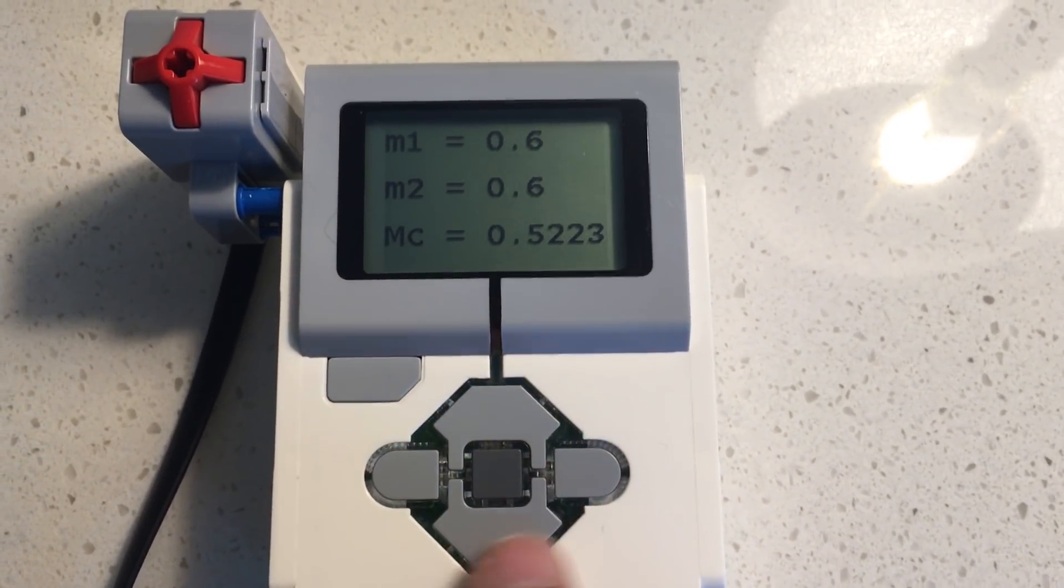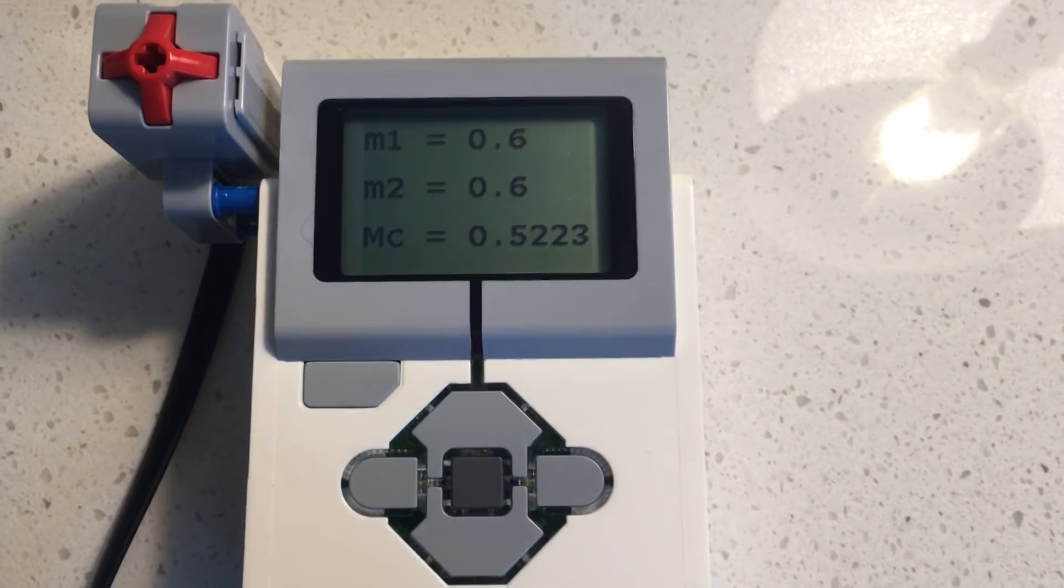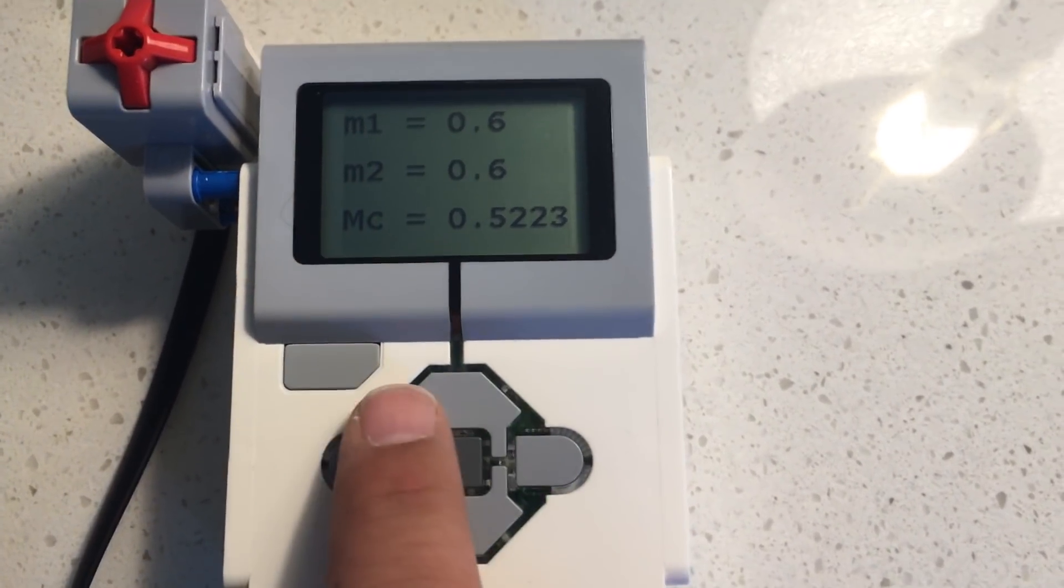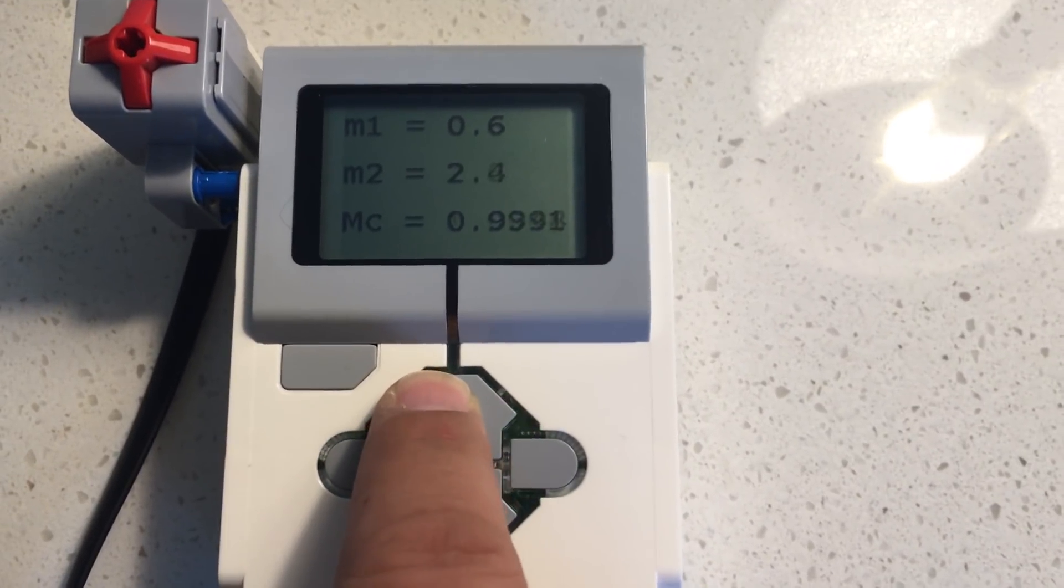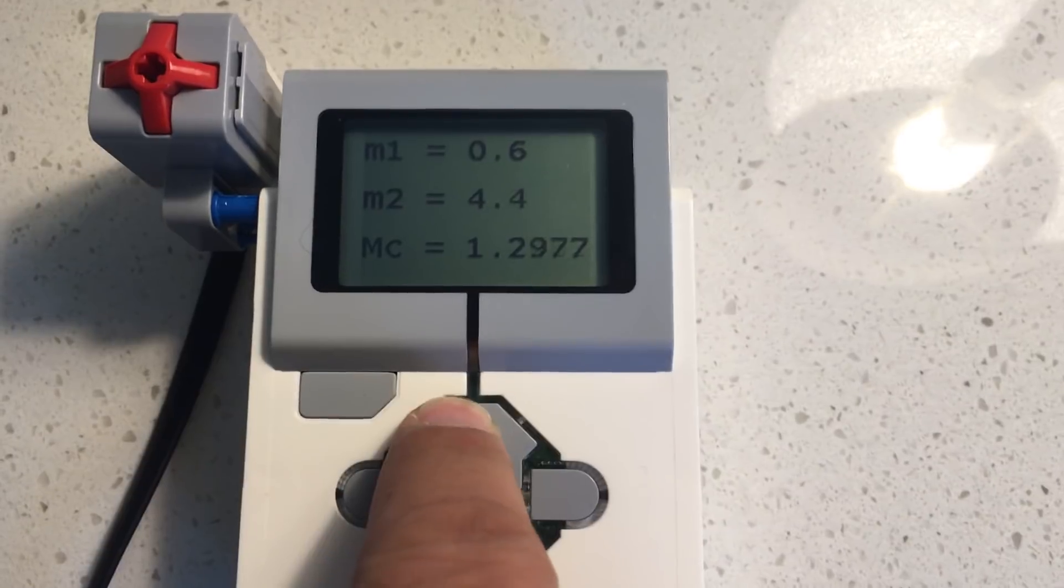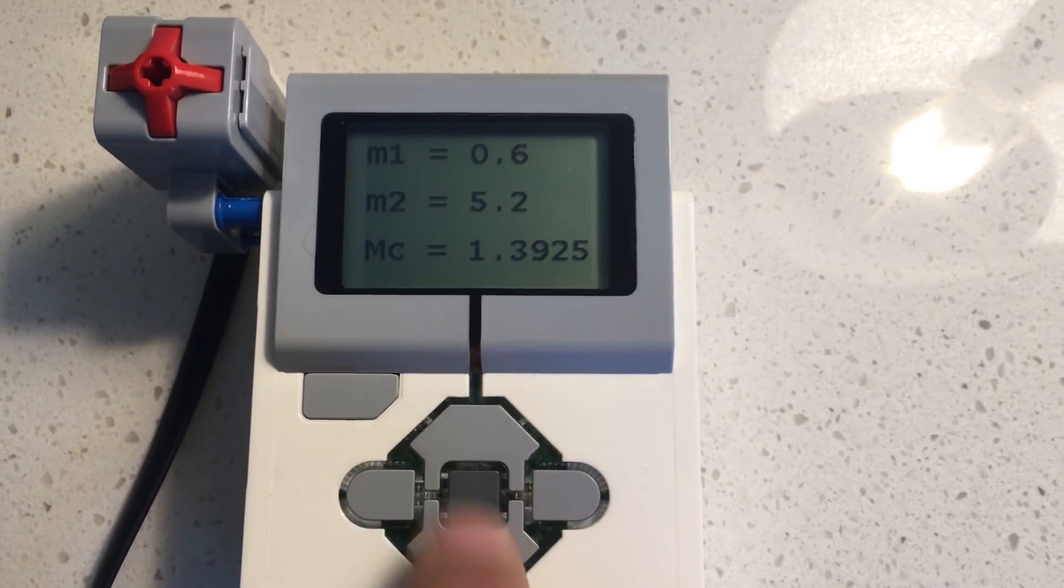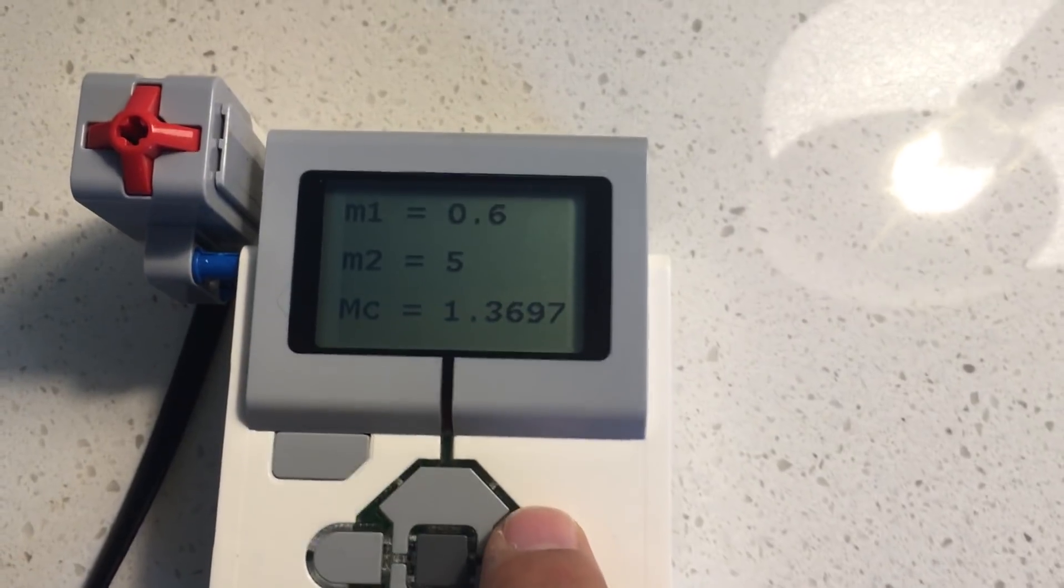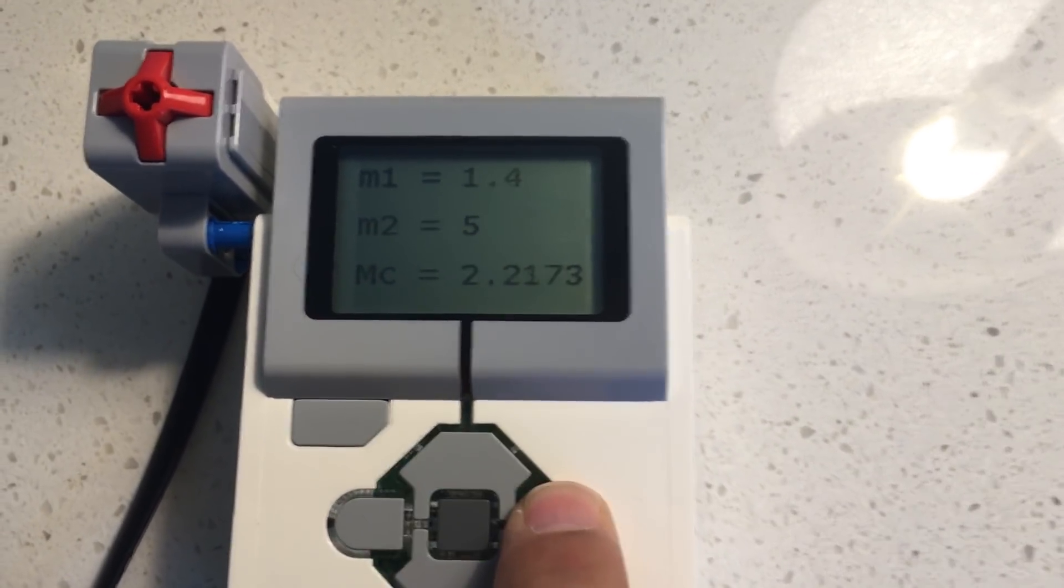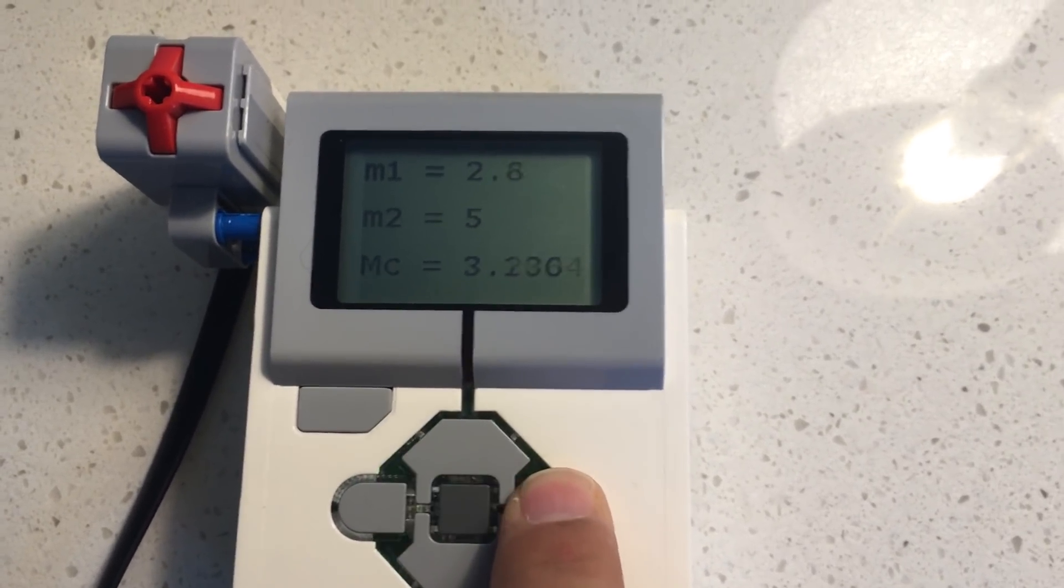So what the program lets you do is it uses the face buttons here to change the masses. So I'm going to increase the mass here. It goes up in a couple of increments. So let's go up to about five solar masses. Okay, you can also go down if you overshoot. You can change the masses independently. So let me run this mass up to five solar masses.